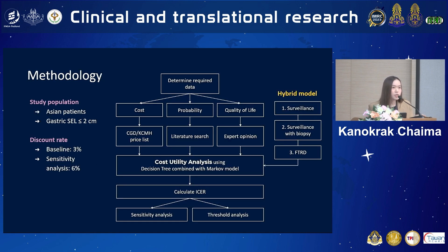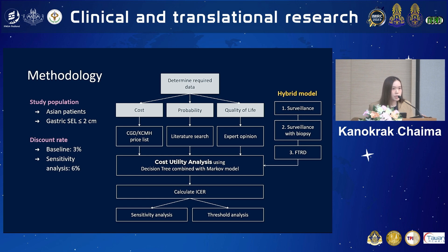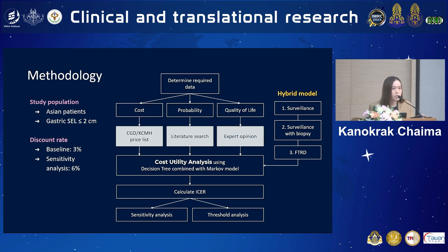For methodology, our study focuses on Asian patients with gastric sub-epithelial lesions less than or equal to 2 cm. After determining the required data from experts, three pieces of information are needed for the analysis: first, cost; second, probability; and last, quality of life. The cost of intervention was mainly collected from the Comptroller General's Department, the probability of events was obtained from several research papers prioritizing Asian studies, and quality of life was obtained from expert opinions where the severity of the disease would be similar to those with chronic peptic ulcer.